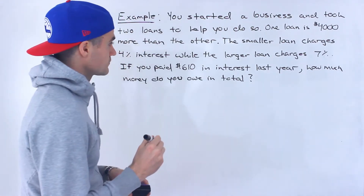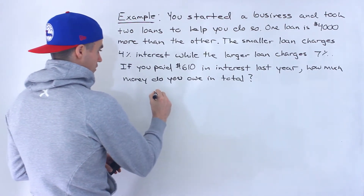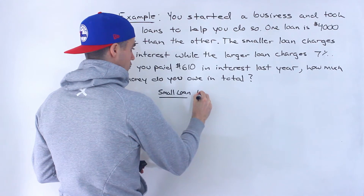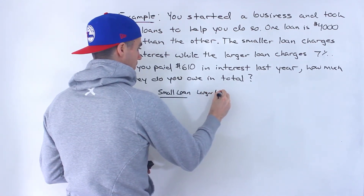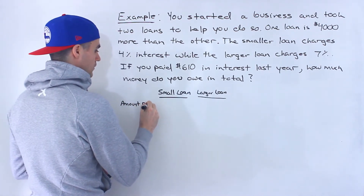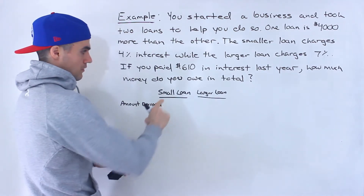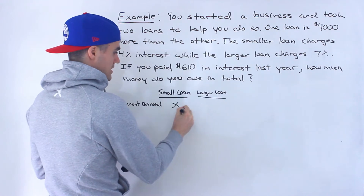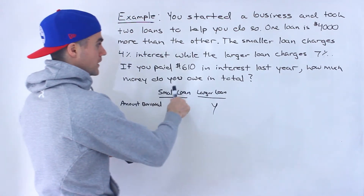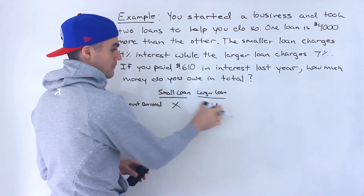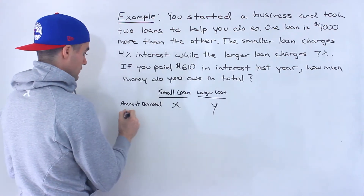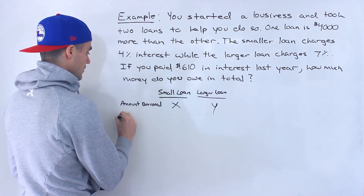So what I'm going to do is actually start a chart here. We have a smaller loan and a larger loan. I'm going to introduce some variables for the amount borrowed in both of these loans. So let's say the small loan, the amount we borrowed is X, and then the larger loan, the amount we borrowed is Y. When they ask how much money do you owe in total, they're basically asking for the sum of these two — X and Y.